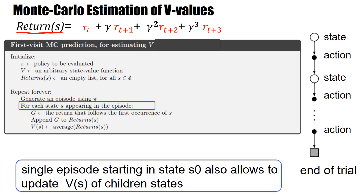The return is defined as the empirical accumulation of rewards you get on the fly while you play an episode. You generate episodes with your policy again and again. Then, for each state — not just the starting state, but for each state in the episode — you calculate the return and append it to a list of returns. Maybe you have played 25 trials through a certain state S. At the end, you average over those 25 episodes to get the estimated value V of S.